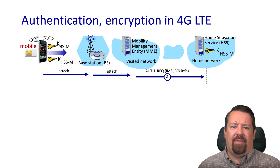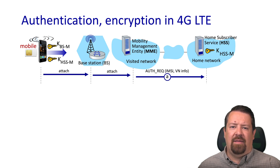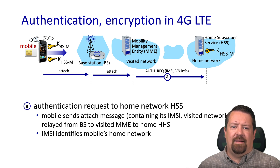Initially, the mobile device attaches to the base station and that request gets forwarded to the mobility management entity. The MME then generates an authentication request, including the IMSI number as well as the visited network information, and sends that to the home subscriber service. The MME knows which home network to connect to based on the IMSI number, which resides in a global database pairing unique identifiers with home networks.